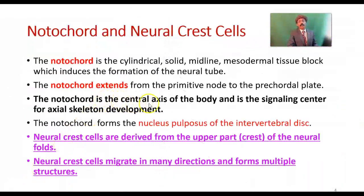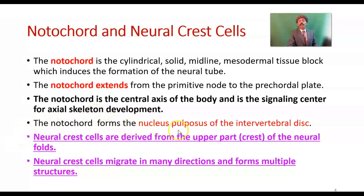The notochord is the central axis of the body and is the signaling center for the axial skeleton development, like the vertebral column, vertebral body, and other structures related to the vertebral body. The notochord also forms the nucleus pulposus of the intervertebral disc.